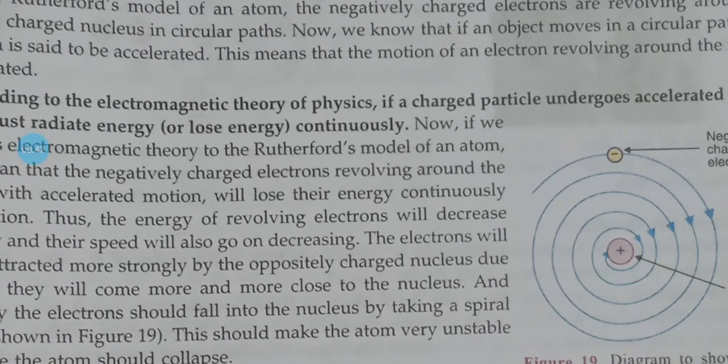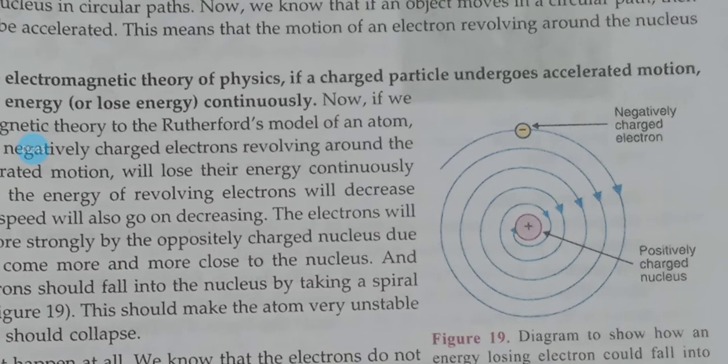But according to the electromagnetic theory, if a charged particle undergoes accelerated motion, it will lose its energy gradually. Since electrons revolve in circular paths, and a body moving along a circular path performs accelerated motion, it means the acceleration of the moving particle changes.